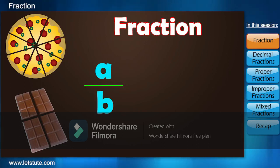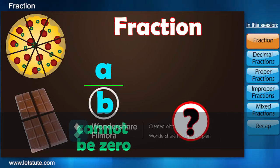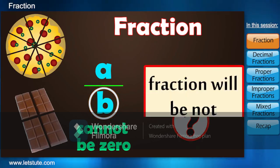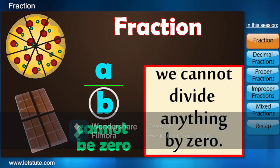Like as I said before, the numbers of the form A by B are called fractions, where B cannot be zero. But why will it not be zero? Because if it is zero, then the fraction will not be defined, as we cannot divide anything by zero.